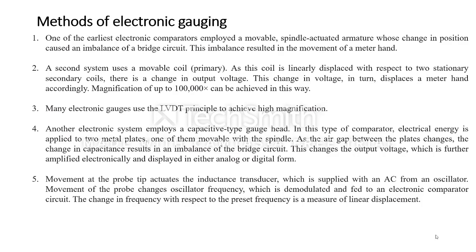The second method involves a movable coil — which is the primary coil — connected through the inductance principle to a secondary coil. This secondary coil gives a voltage output, and here there will be an amplification of around 1 to 10 to the power of 5. This amplification takes place in the second method, which is mostly used with the LVDT principle.